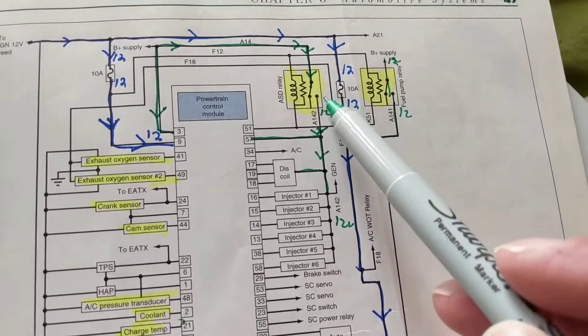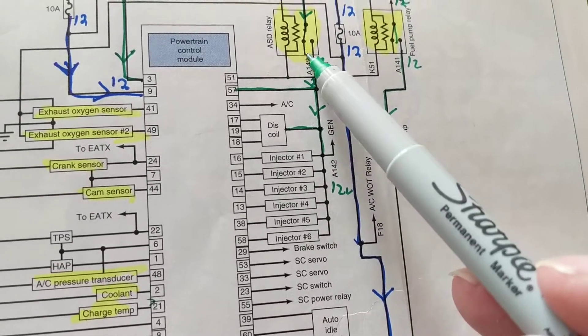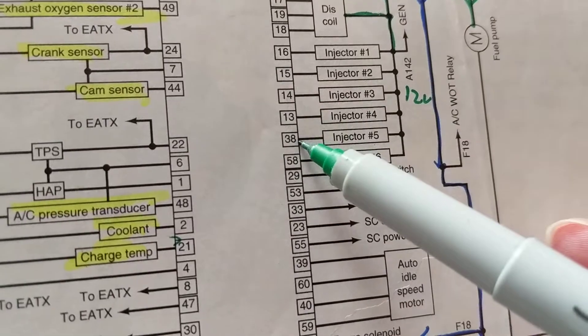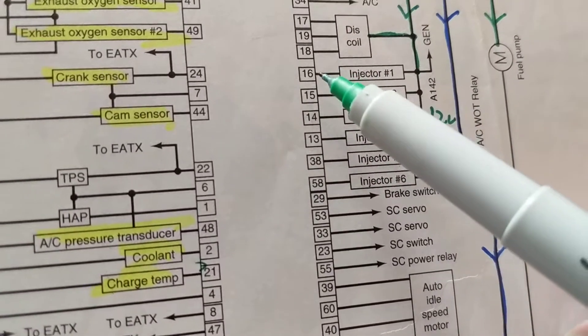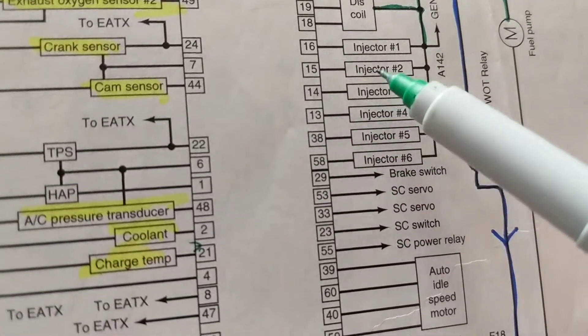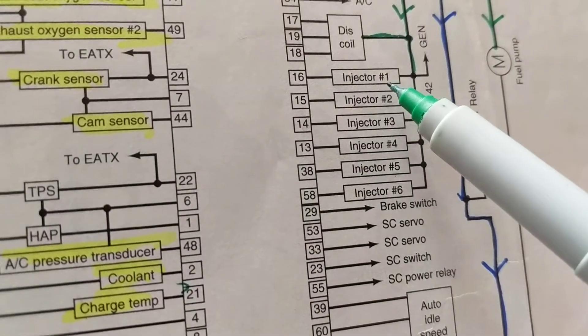Like I said, when relays close, then the injectors get the 12 volts. Now the other side of the injectors always go to the computer, and the computer turns the injectors on and off, on and off, on and off.